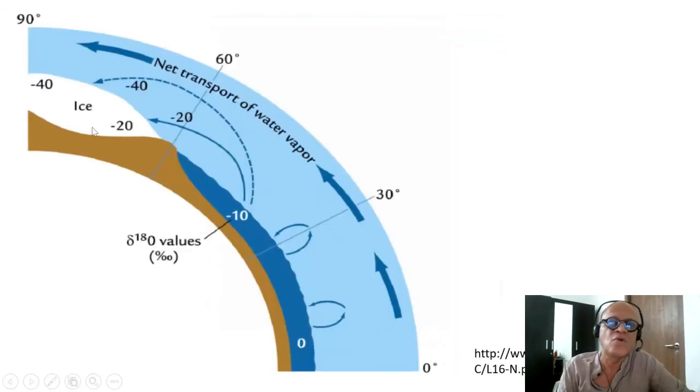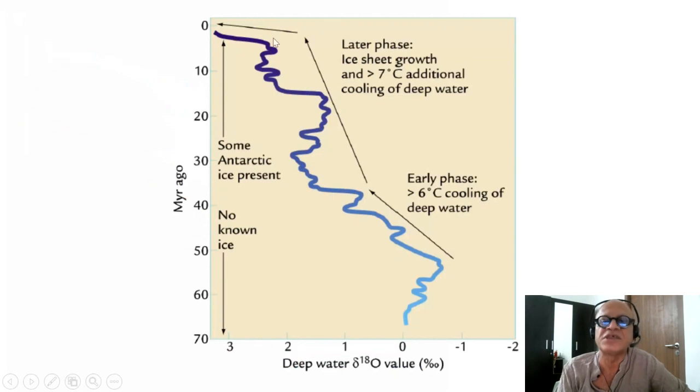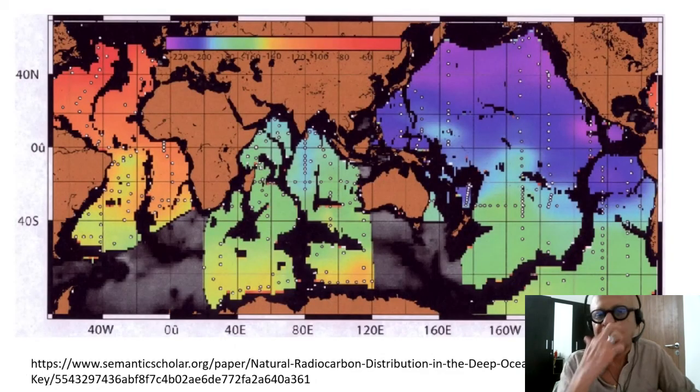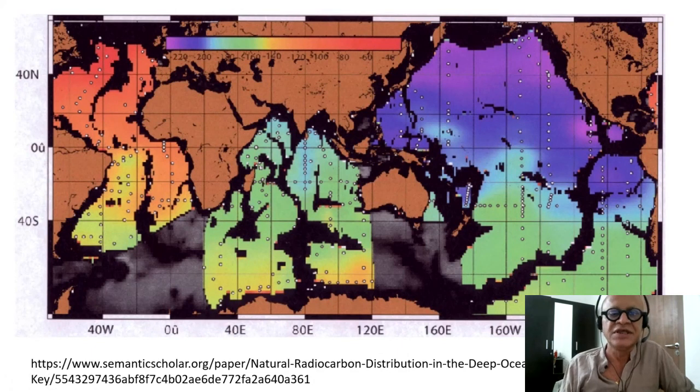O18 is left behind, so the deep water is getting enriched in O18 as you get ice sheet growth and cooling, whereas you have warmer temperatures and less glaciers means depleted O18. So I hope I explained it properly, but make sure you understood it.